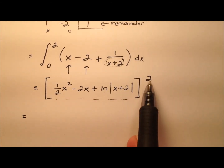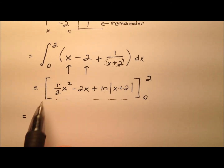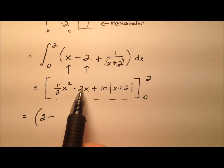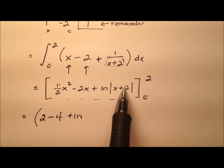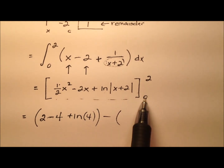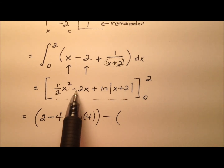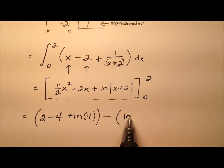Let's plug in our limits. Starting with x equals 2: 2 squared is 4, half of that is 2, minus 2 times 2 gives minus 4, plus the natural log of 2 plus 2, which is the natural log of 4. Then subtracting the evaluation at x equals 0: we get 0 minus 0, plus the natural log of 2.